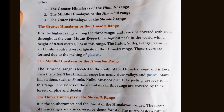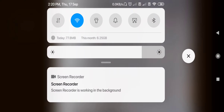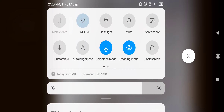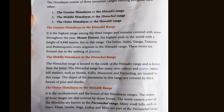We will continue. The Middle Himalayas, or the Himalaya Range. The Himachal Range is located to the south of Himadri Range and it is lower than the latter. Hill stations such as Shimla, Kulu, Mussoorie, and Dalhousie are located in this range. The slopes of the mountains in this range are covered by thick forest of pine and deodar.